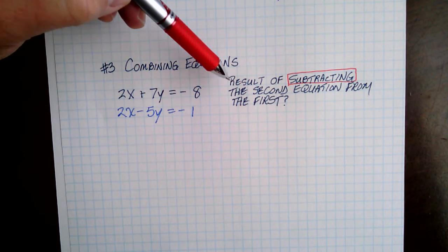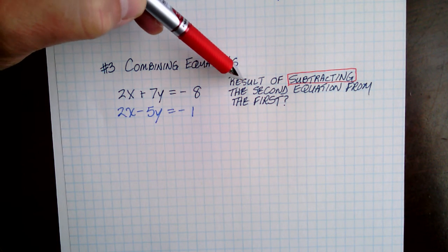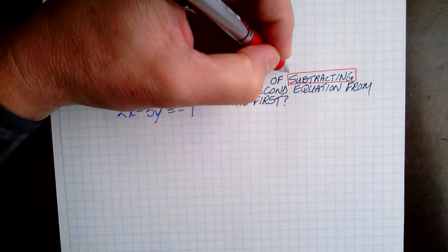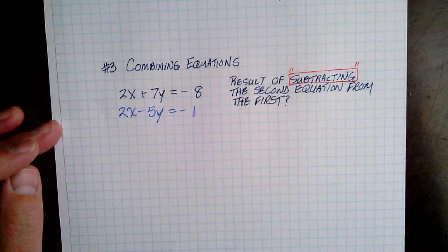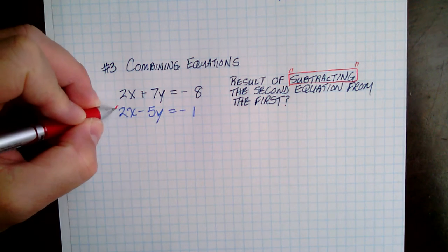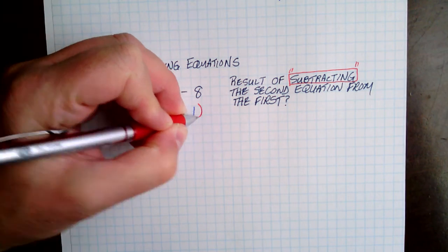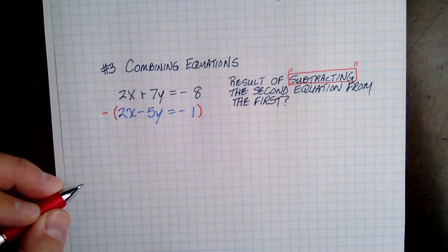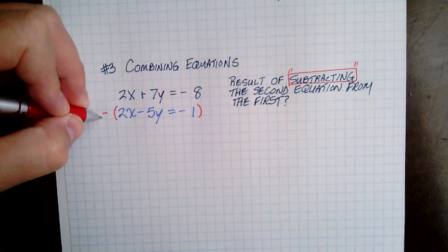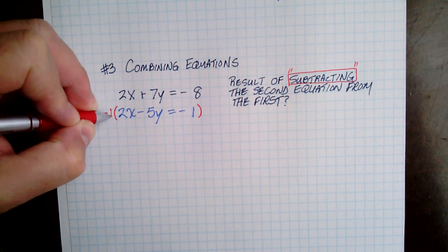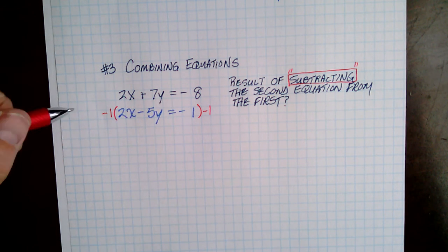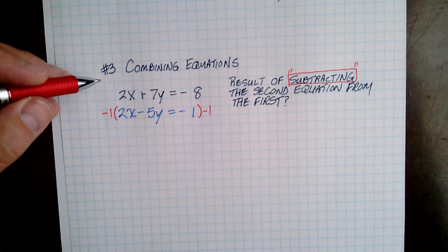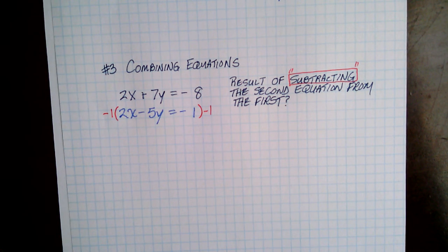So then the directions say, what is the result of subtracting, subtracting the second equation from the first. So if I take and I subtract the second equation, what that means is I'm going to subtract this from this or multiply everything by a negative one and then combine the two equations.